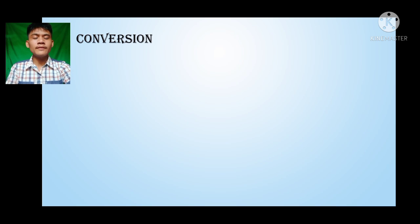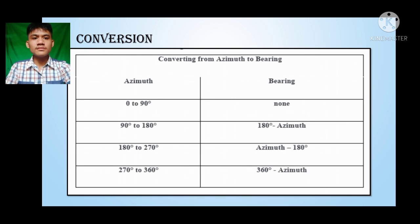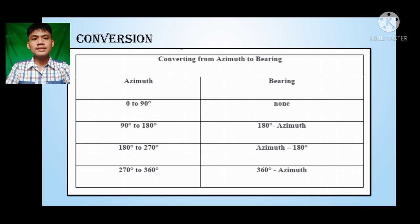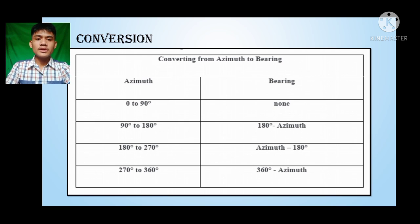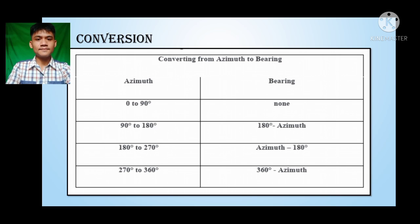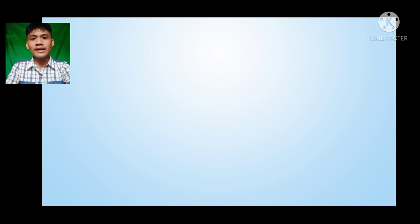This would be the conversion if we have a given azimuth to convert to bearing. If the azimuth measures between 0° and 90°, the bearing is the same as the given azimuth. If the azimuth measures between 90° and 180°, the bearing equals 180° minus the given azimuth. If the azimuth measures between 180° and 270°, the bearing equals the given azimuth minus 180°. And if the azimuth measures between 270° and 360°, the bearing equals 360° minus the given azimuth.